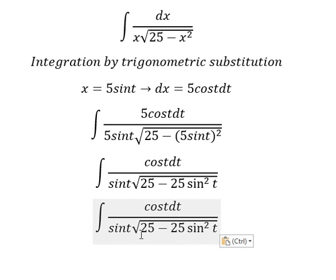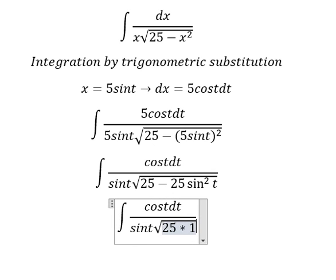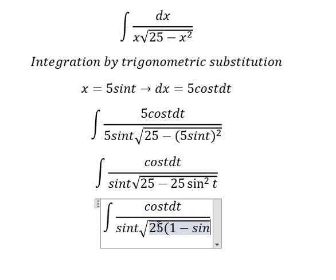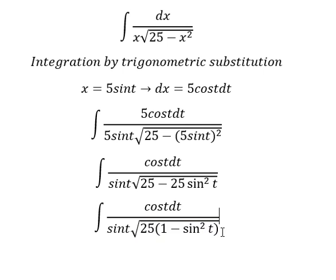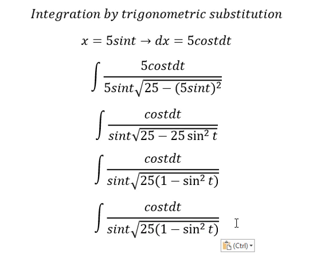Number 25, we can do factorization. This one we change for cosine t squared.